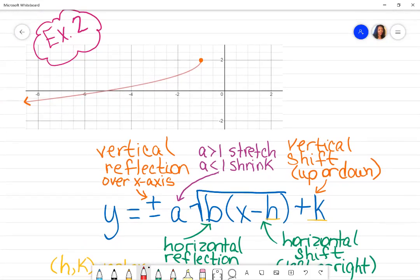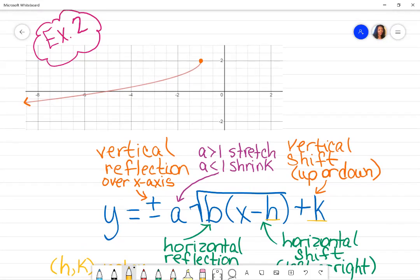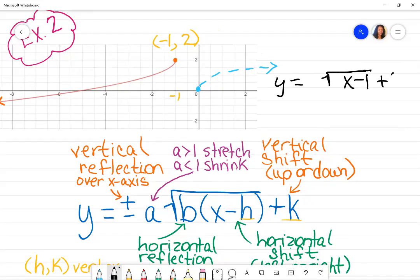This next one, I'm going to start with the same process. Locate my vertex. On this graph, it went over negative one and then up two. Negative one means left one unit, positive two means up two units. Starting from my original parent function y equals square root of X, the graph went over to the left two units and up two units. So now I can write the negative one under the radical, plus two is my K.